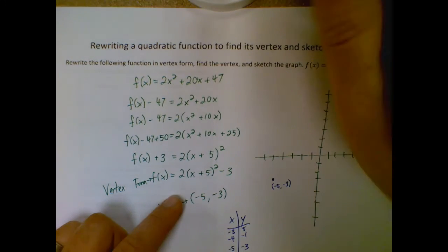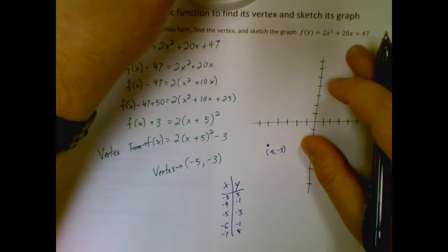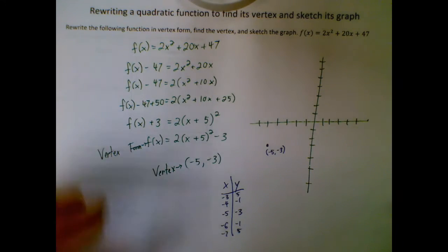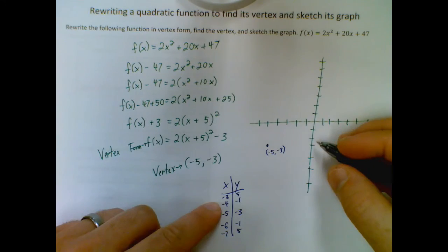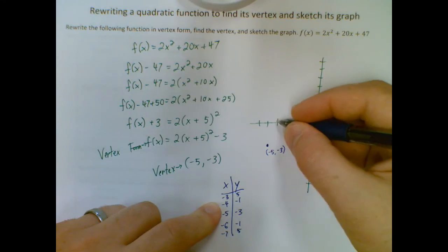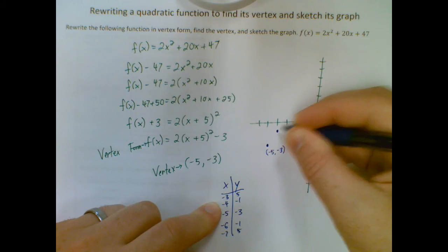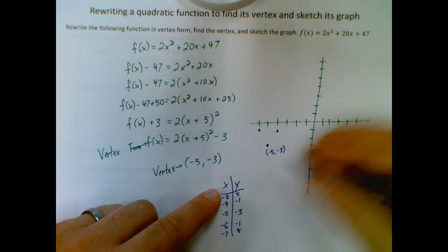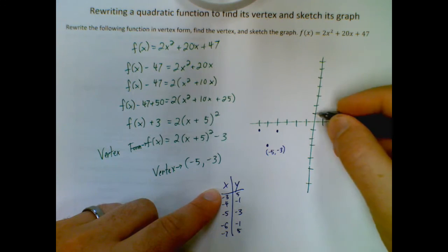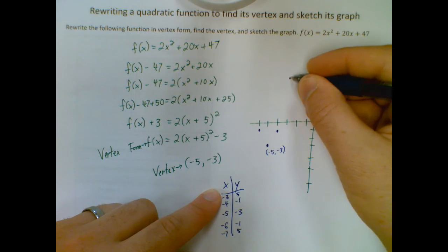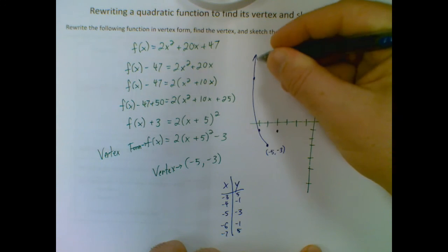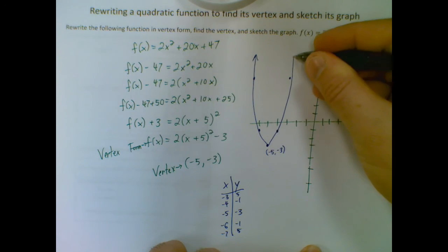Alright. What I did here is I just plugged in negative 3, negative 4, negative 6, and negative 7 to get me some more points. Let's go ahead and put those on our graph now. Negative 4, negative 1. Negative 6, negative 1. Negative 3, 5. 1, 2, 3, 4, 5. And negative 7, 5. So my sketch of my graph, then, would look like that.